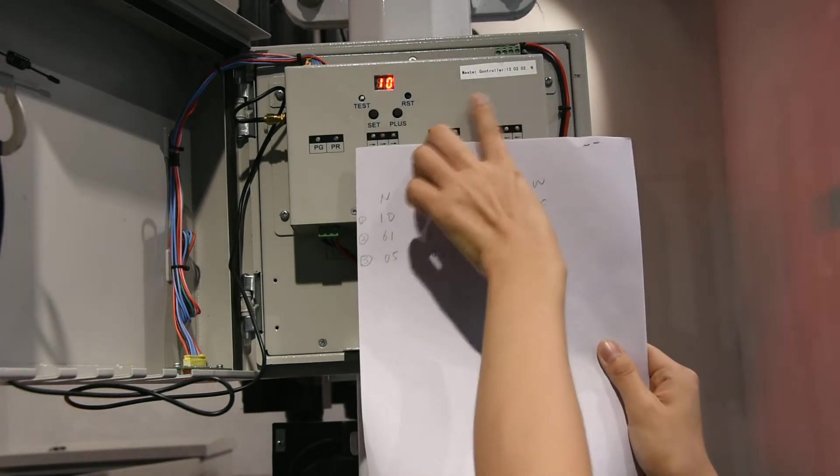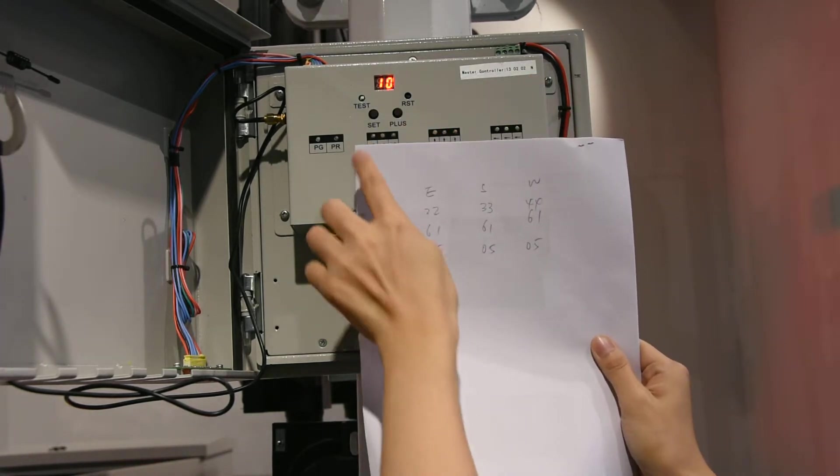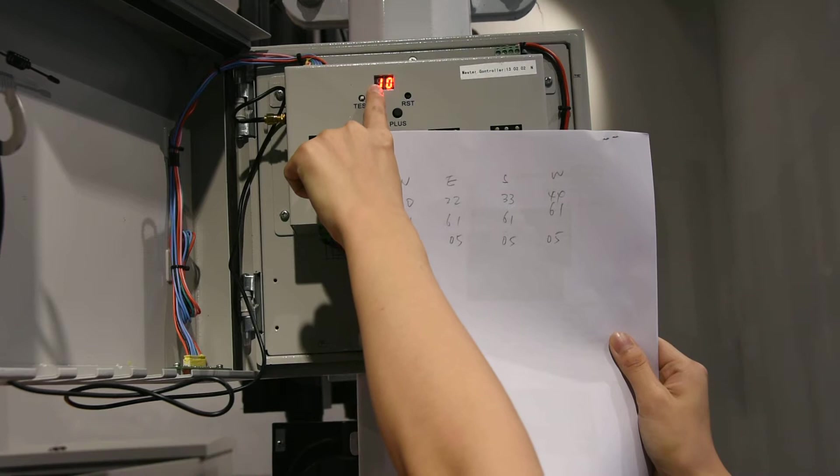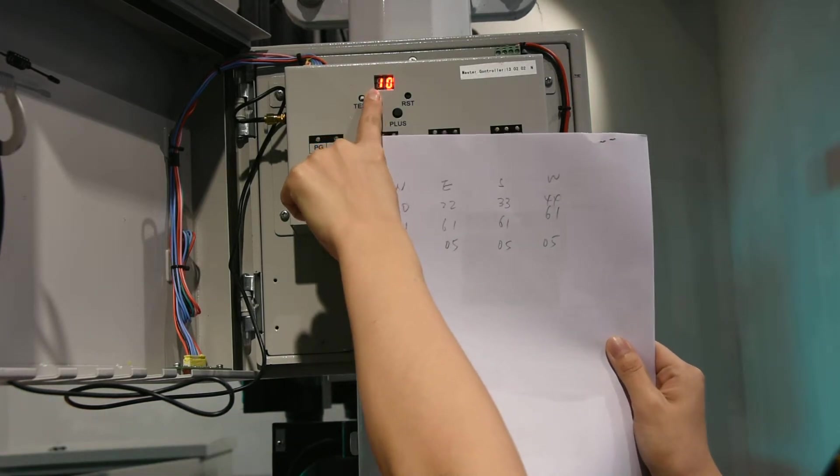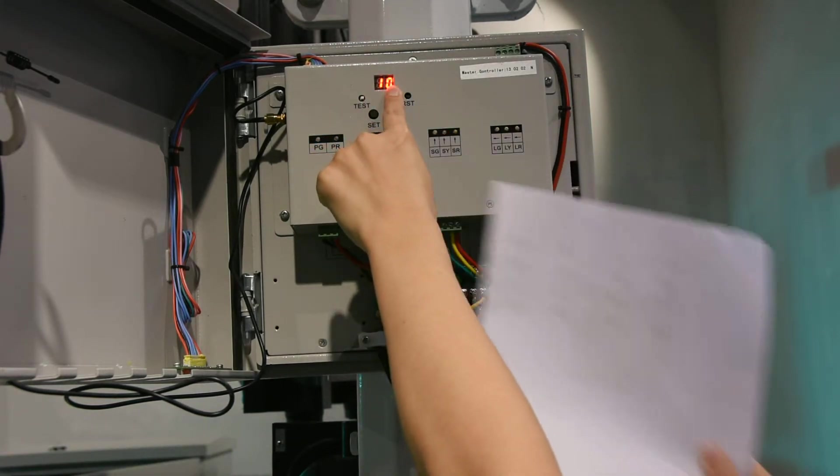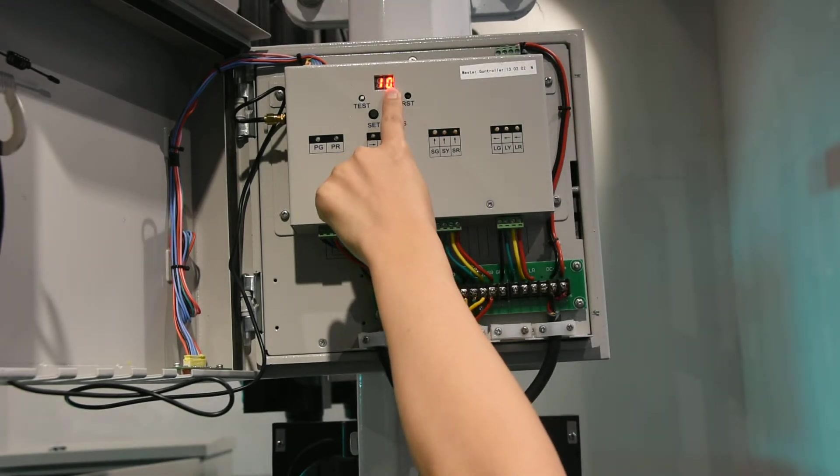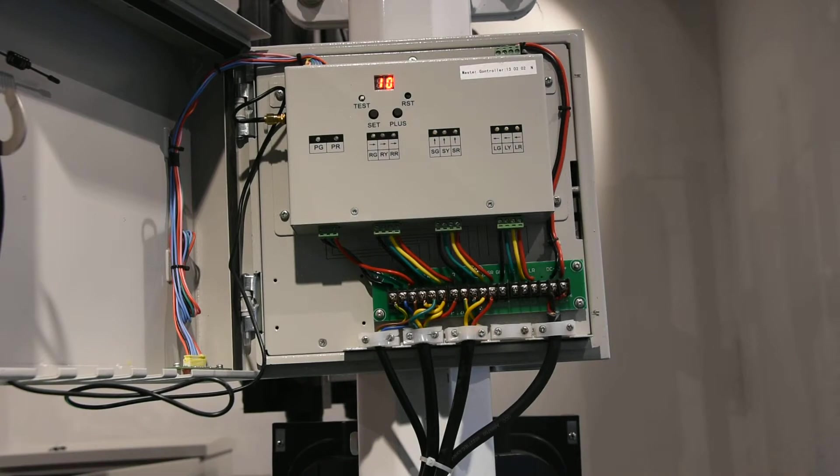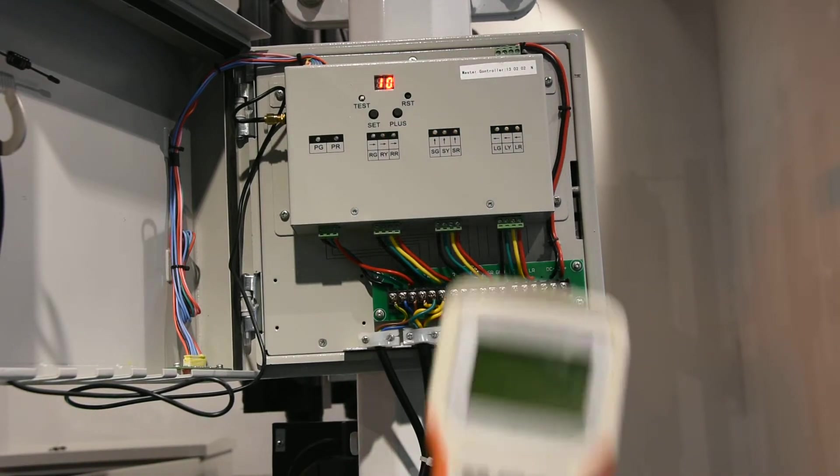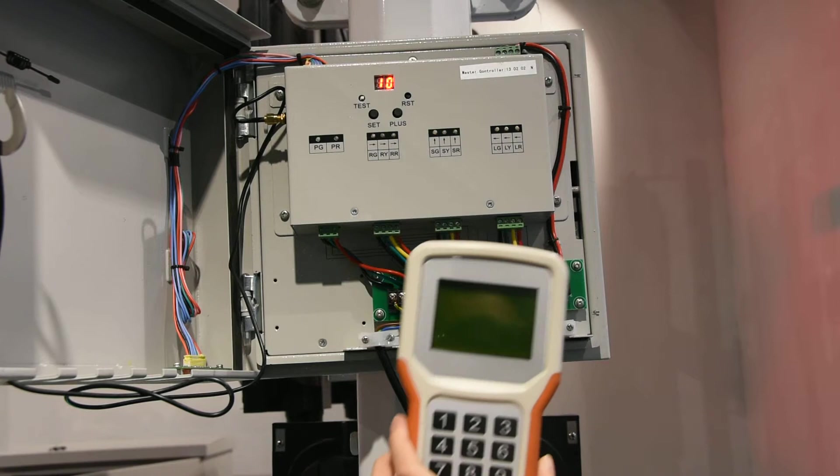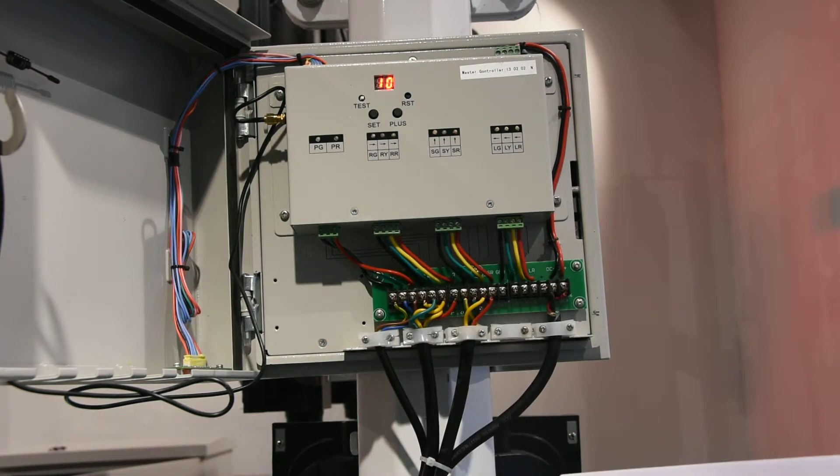You can see this is for the north direction. And number one means master controller. Zero means the number of the slave controller. But we cannot set up here. We need to use the remote to set up the number of the slave controller.